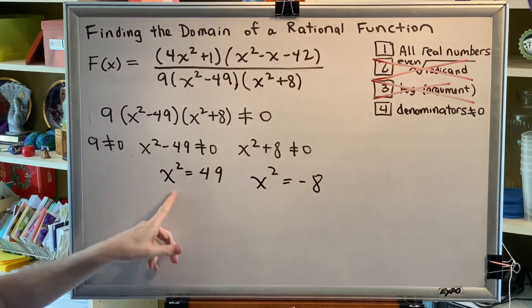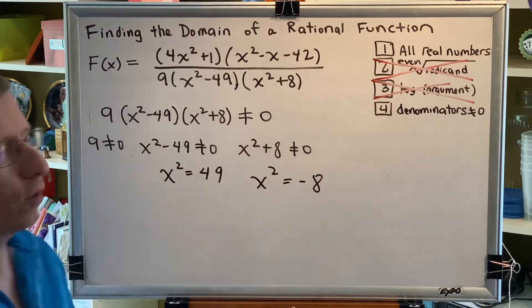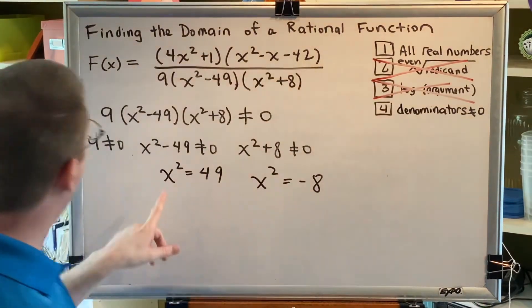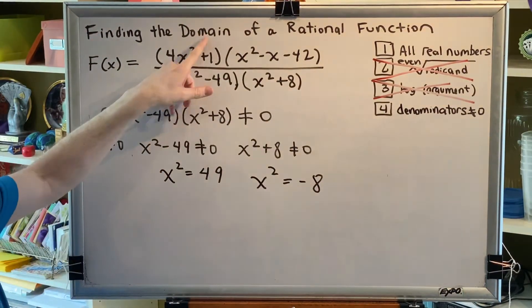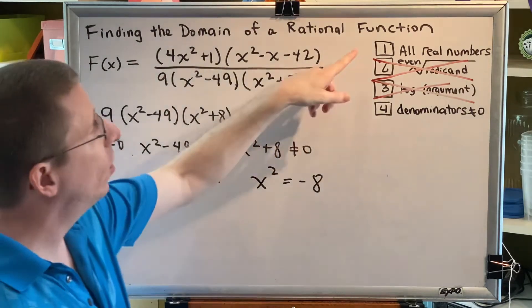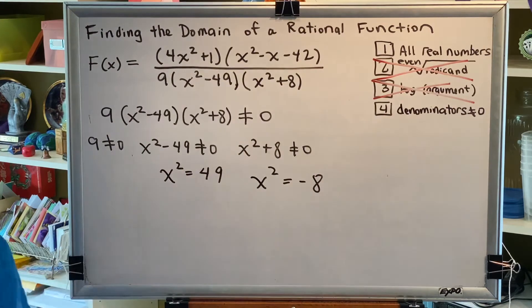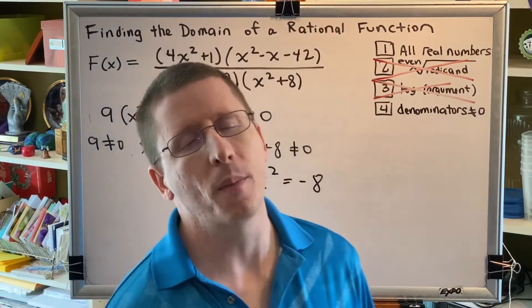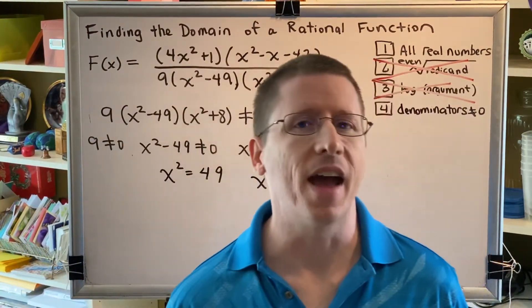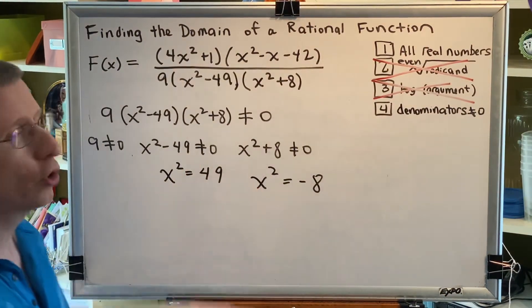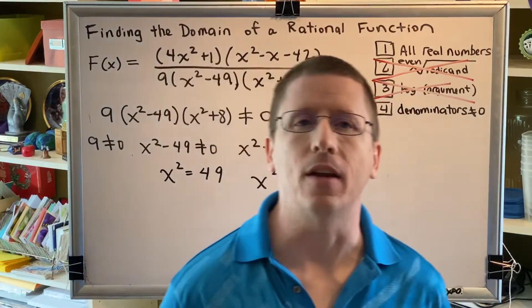Now I'd like to compare these two equations because although they look very similar, the results are going to be very different. Remember that when we are finding domain, we're looking for all of the real numbers. And so when you square a real number, what happens? Real numbers come in three flavors: positive, negative, and zero.